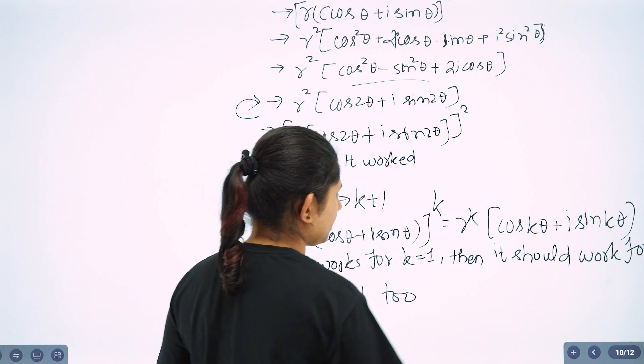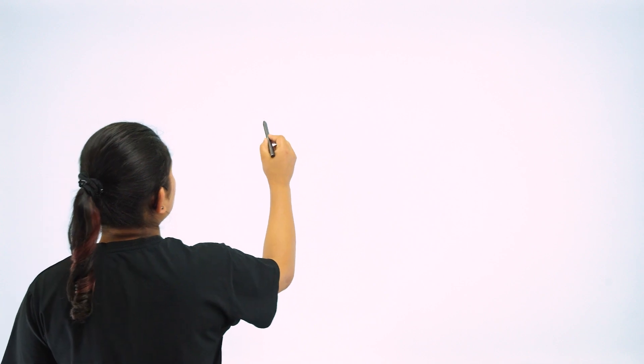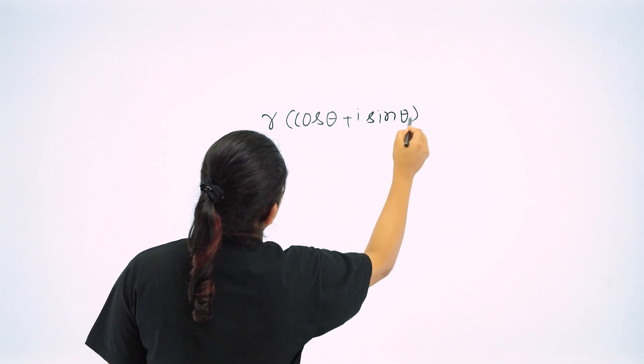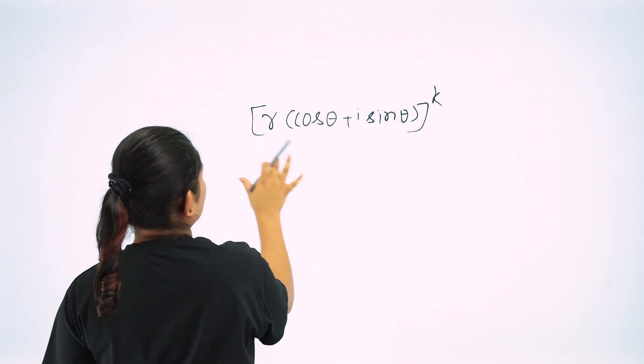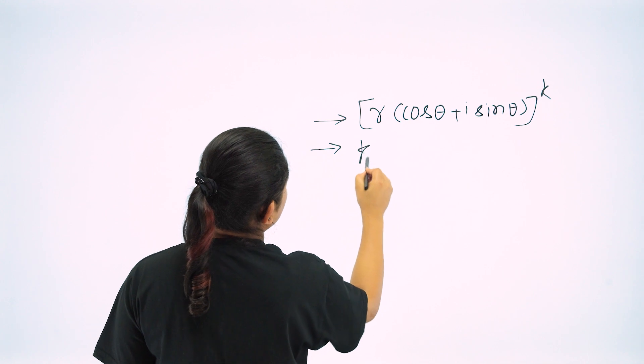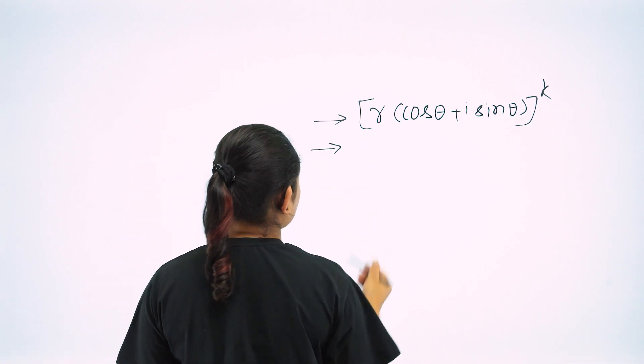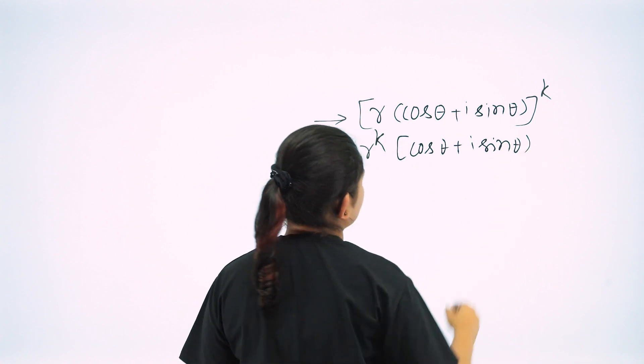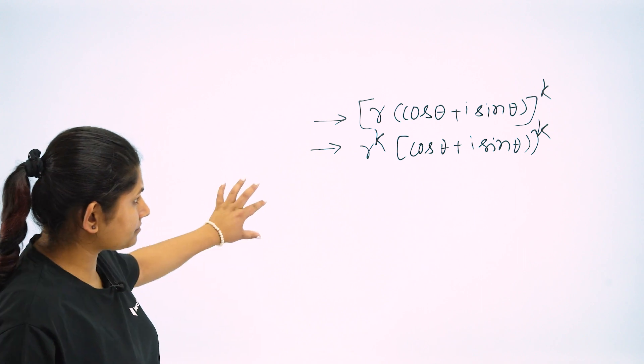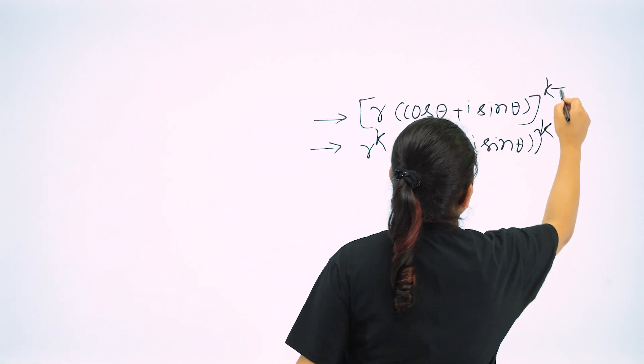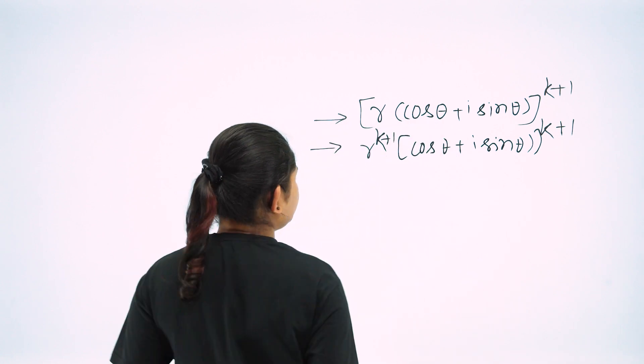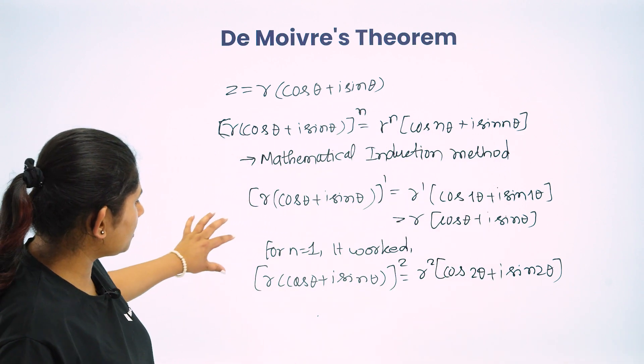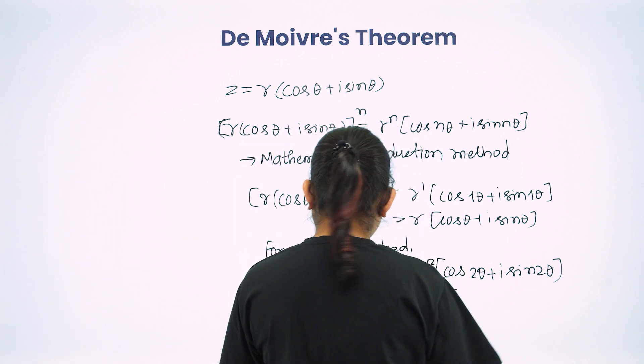So we have r cos theta plus i sin theta power k plus 1. So from our previous case, what do we have? We have power 2. So if we have the pattern, we have power shared, and we have k plus 1 theta.